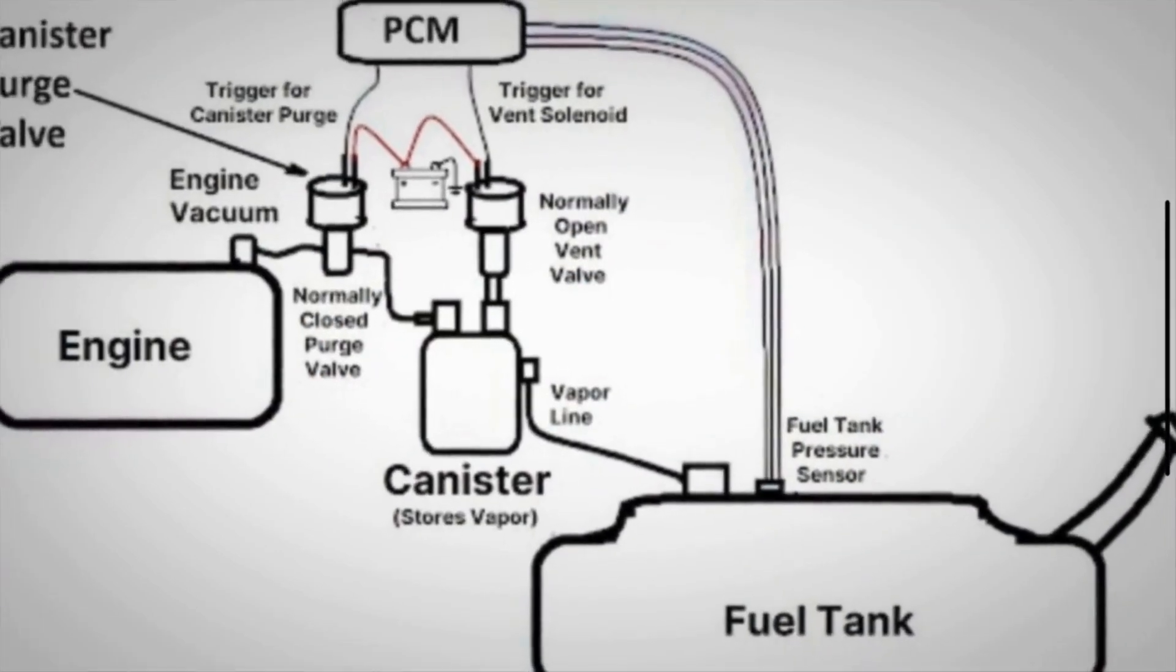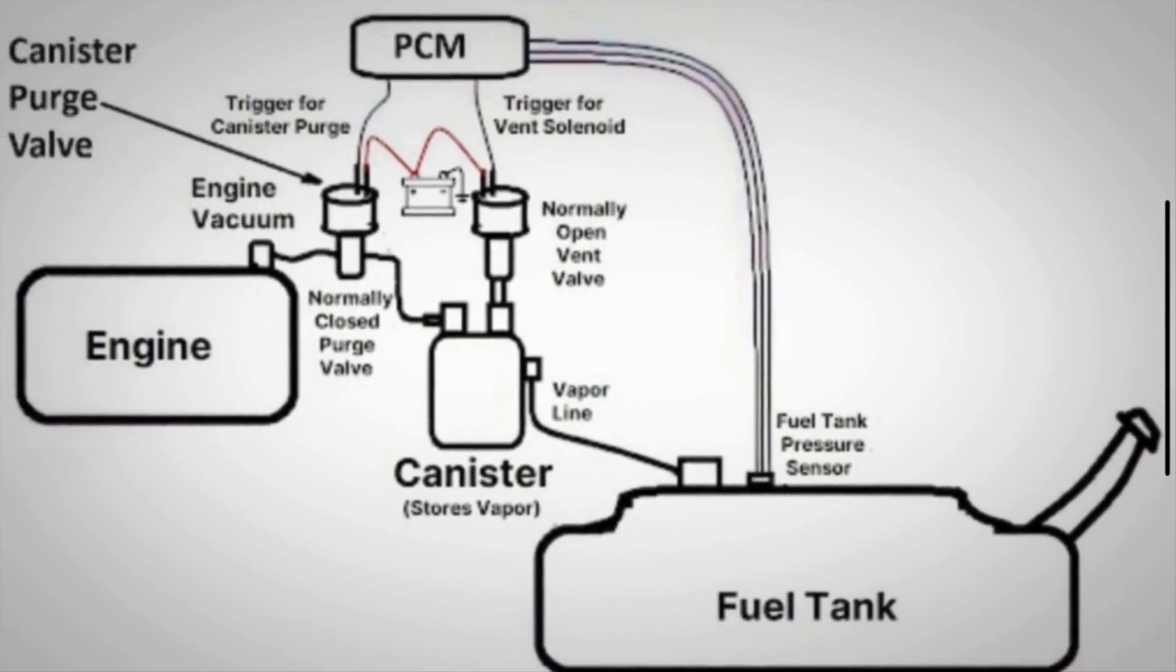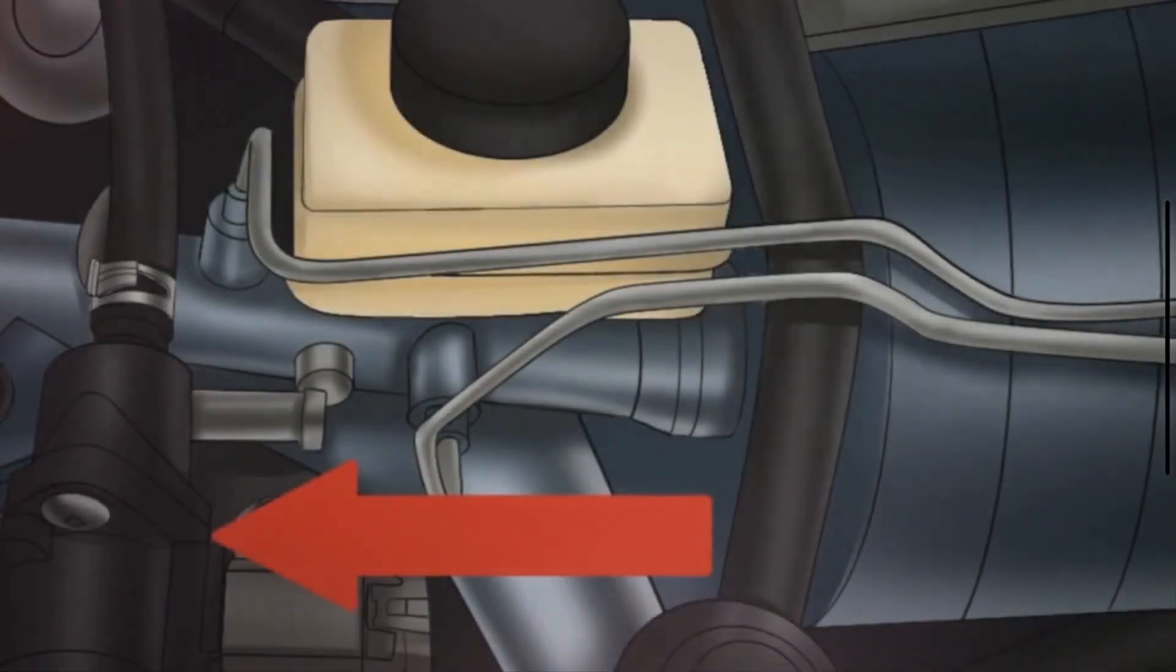A purge valve is usually located between the intake manifold and the fuel tank of a car and is connected to the EVAP system's hoses and tubing.